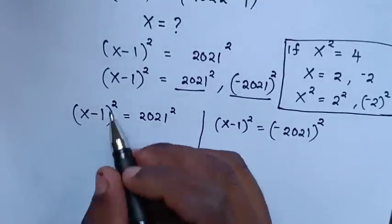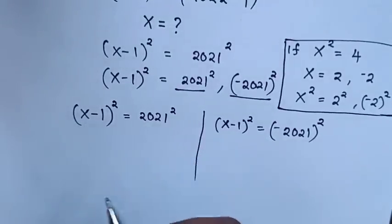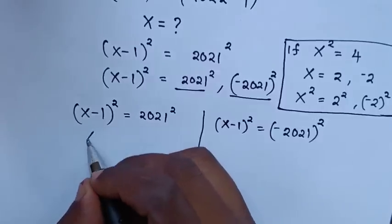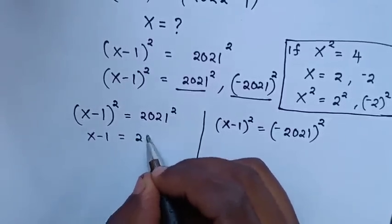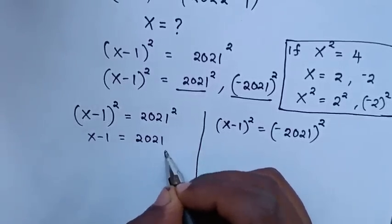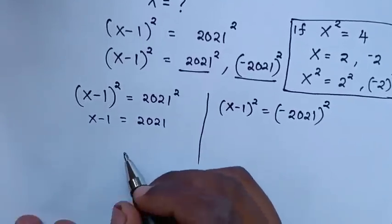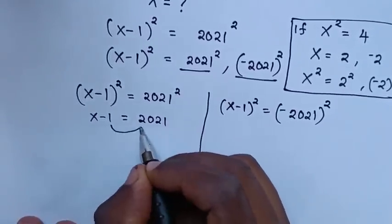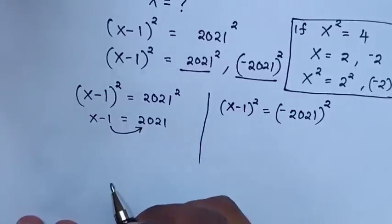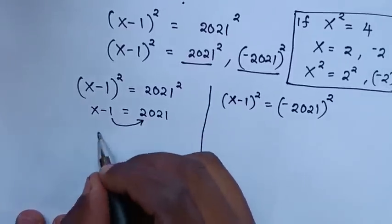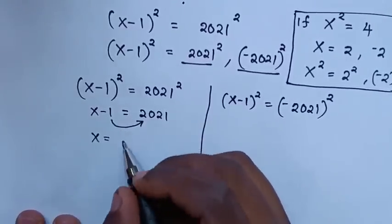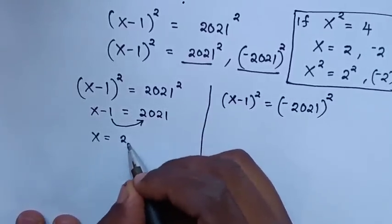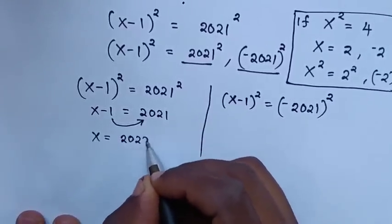When we apply square root to both sides of the first case, it will be x - 1 = 2021, so x = 2021 + 1 = 2022.